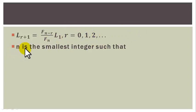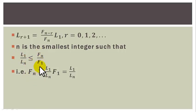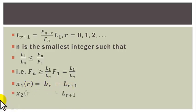Here N is the smallest integer such that L1 over LN is less than or equal to FN over F1 — that is, by cross multiplication, FN is greater than or equal to L1 over LN times F1. But since F1 is equal to 1, this is equal to L1 over LN. Now we select our first points: X1R equal to BR plus LR+1, and X2R is equal to AR plus LR+1.